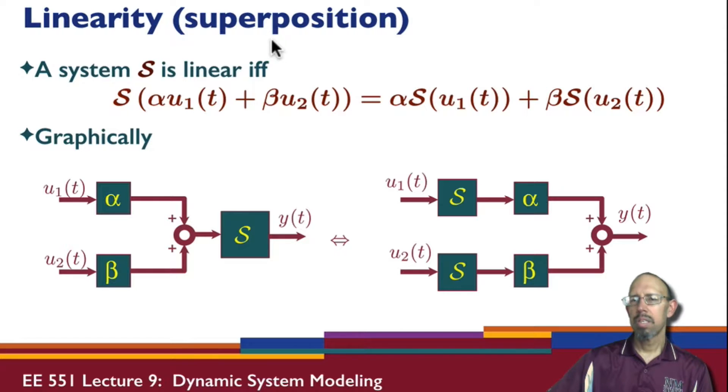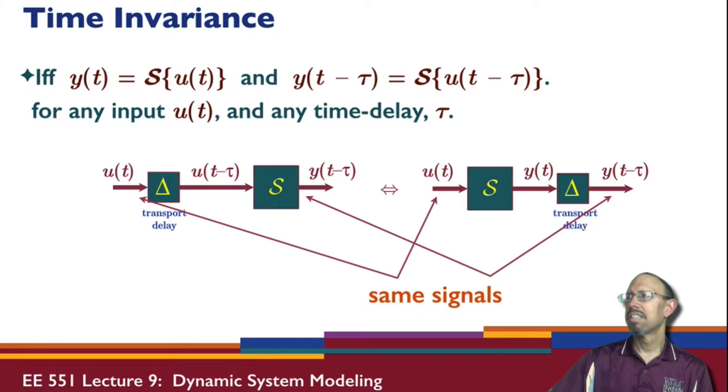If and only if. So that's what linear refers to. Systems that do not satisfy this property are called non-linear.